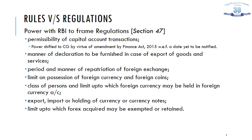RBI has the power to frame regulations under section 47 of FEMA, covering capital account transactions, the manner of declaration in case of exports of goods or services, and the manner of repatriation. The power to frame regulations for capital account transactions has been shifted to the central government by virtue of an amendment; however, the same is yet to be enforced and at present is still governed by RBI regulations.